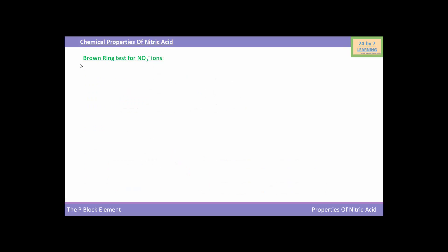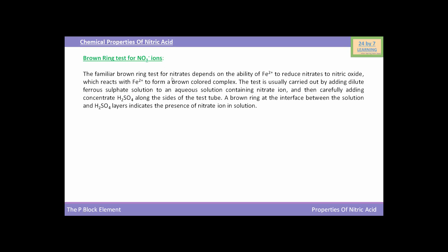Now we will see the brown ring test for nitrate ions. This familiar test depends on the ability of ferrous iron to reduce nitrates to nitric oxide, which then reacts with ferrous iron to form a brown-colored complex. The test is carried out by adding dilute ferrous sulfate solution to an aqueous solution containing nitrate ions, then carefully adding concentrated H2SO4 along the sides of the test tube. A brown ring at the interface indicates the presence of nitrate ions.